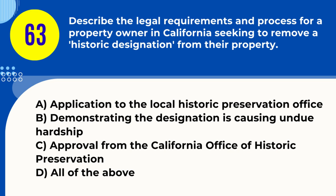Question 62. Explain how transferable development rights (TDR) can be used in real estate development in California. A. Allows developers to purchase additional building rights from other property owners B. Used to preserve historic or natural areas by transferring development potential C. Can increase building density in designated areas D. All of the above. Answer: D. All of the above. Explanation: TDRs allow developers to purchase additional building rights, helping preserve certain areas while concentrating development in others.